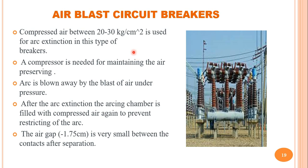The next type of circuit breaker is the air blast circuit breaker. Compressed air between 20 to 30 kg per cm² is used for arc extinction, with a compressor for maintaining air pressure. The arc is blown away by the blast of air under pressure. After arc extinction, the arcing chamber is again filled with compressed air to prevent restriking of the arc. The air gap between contacts after separation is very small — nearly 1.75 cm — which is an advantage, as the arc can be extinguished with a small arc length.